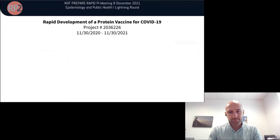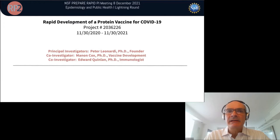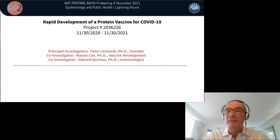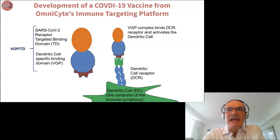My name is Peter Leonardi, CEO and founder of OmniSight. Our RAPID program was the rapid development of a protein vaccine for COVID-19. My background is in biotech. The project was led by myself and Mano Cox, who was CEO of Protein Sciences and developed the first recombinant seasonal flu vaccine, along with Ed Quinlan, our lead immunologist from Li Ping Chen's lab at Yale — Li Ping Chen being one of the fathers of modern immuno-oncology.